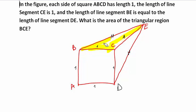Let's analyze this figure. Let's consider triangles BCE and CDE. We see that BE is equal to ED, and CE is common to both triangles. Also, BC is equal to 1 and CD is equal to 1. So all the sides of triangle BCE are equal to the sides of triangle CDE — both triangles are congruent.